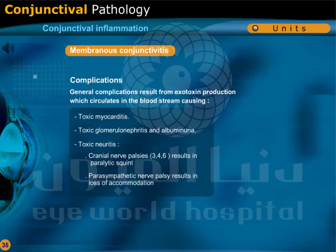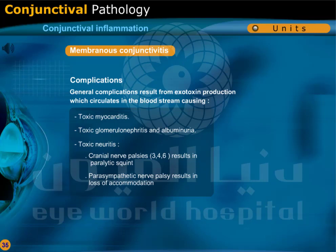General complications of membranous conjunctivitis result from exotoxin production, which circulates in the bloodstream, causing toxic myocarditis, toxic glomerulonephritis, albuminuria, and toxic neuritis.